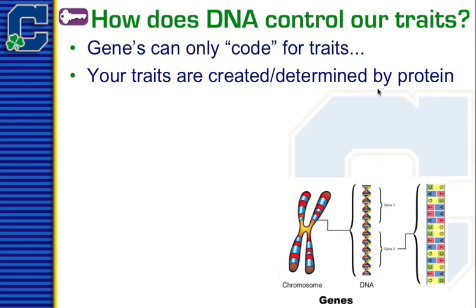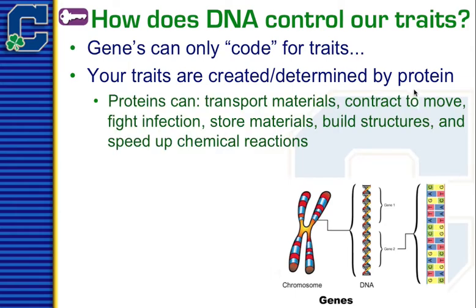Proteins are actually what's going to be determining what we look like, how we act, the hormones inside of us, and things like that. When we talked about proteins, we said they had those seven functions: transporting materials, contracting for movement, fighting infections, storing materials, building structures, and speeding up chemical reactions like enzymes. But those are only created based on small sections of DNA — here you can see gene 1 and gene 2. Whatever code you have, the G's, A's, T's, and C's, whatever order they're in, will determine what trait you have and what protein gets made.